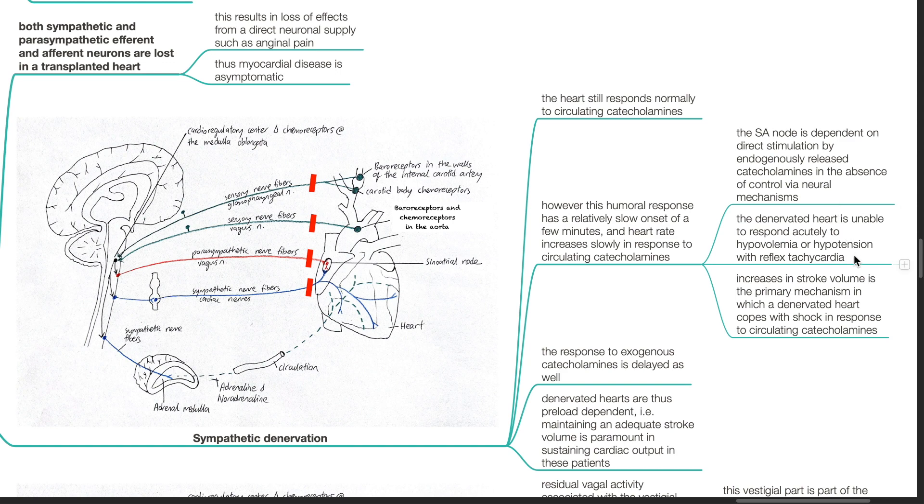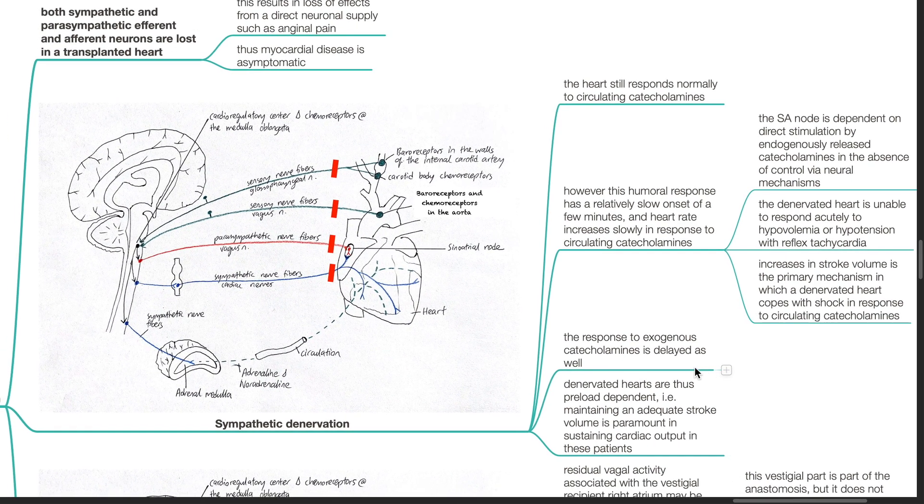The denervated heart is unable to respond acutely to hypovolemia or hypotension with reflex tachycardia. Increases in stroke volume is the primary mechanism in which a denervated heart copes with shock in response to circulating catecholamines. The response to exogenous catecholamines is delayed as well.